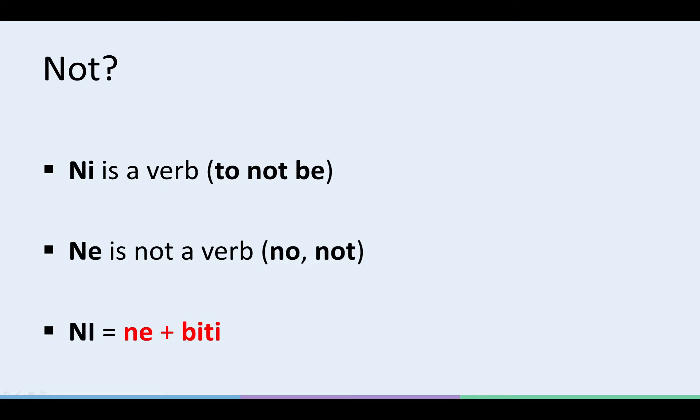Basically, NI is NE plus BITI, or TO BE. In other words, NI is a negated form of the Slovene verb TO BE.